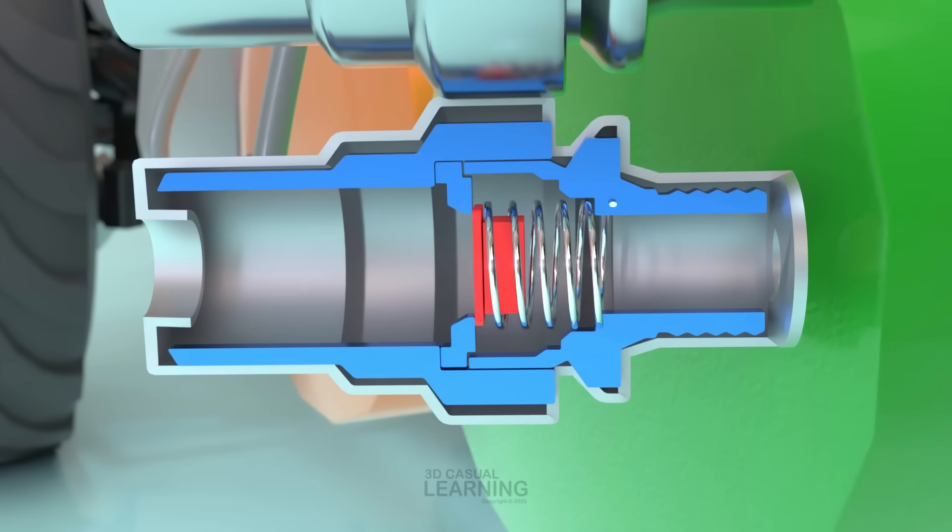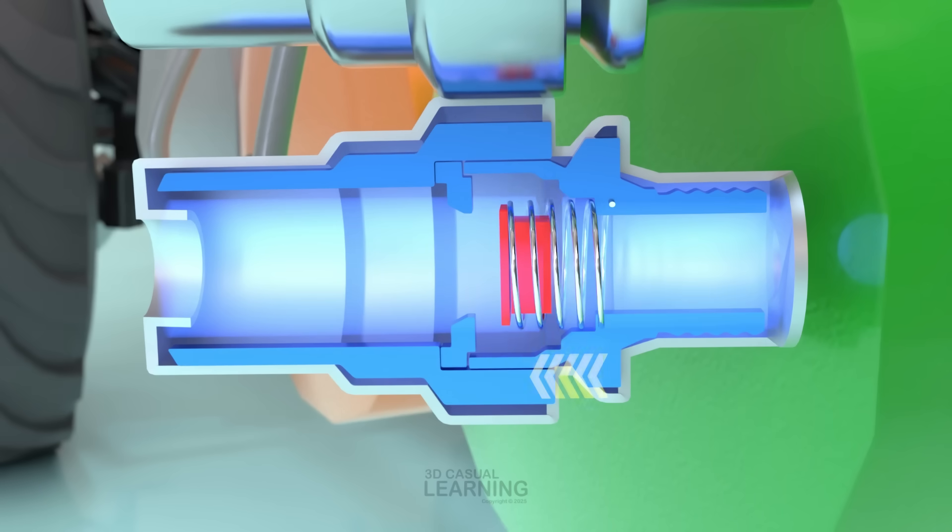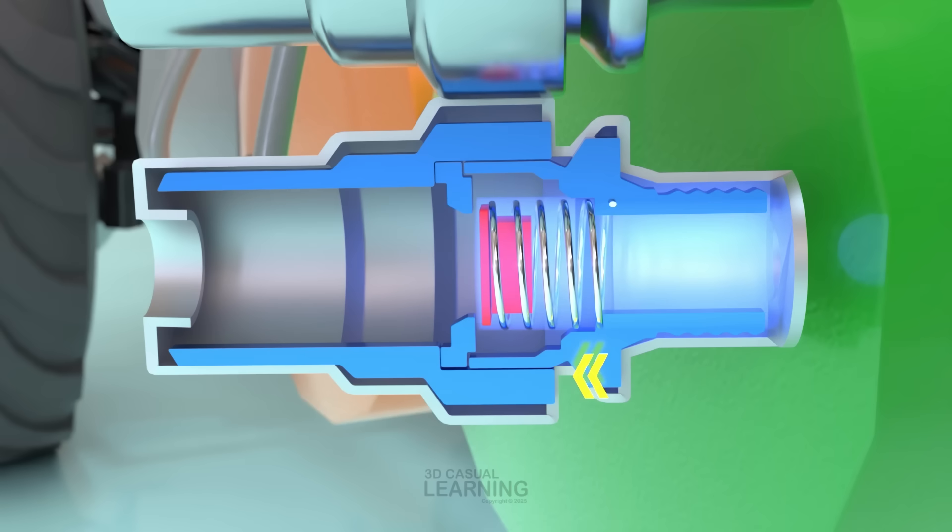The check valve design is simple but very effective. It contains a supply inlet port, a valve seat, a spring, and a delivery port. When air pressure from the supply reservoir exceeds the spring force, the valve opens, letting air into the service reservoirs. If the pressure falls, the valve closes, sealing off the service reservoirs to retain braking capability.